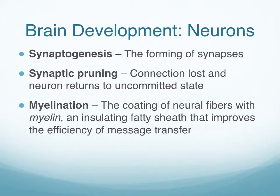Early in development there is a process called synaptogenesis — the very rapid formation of these synaptic connections. It's basically explosive, to the point that the average two-year-old has more synaptic connections than the average adult. Why would that be? Probably what's happening is that the brain is essentially primed for learning — everything is new to the very young child, and the brain is prepared to take in just about any type of information and process it.